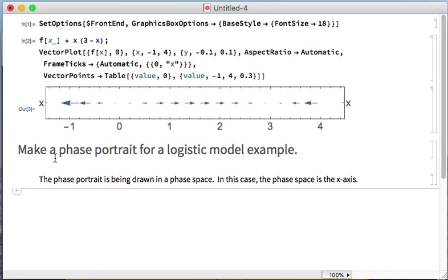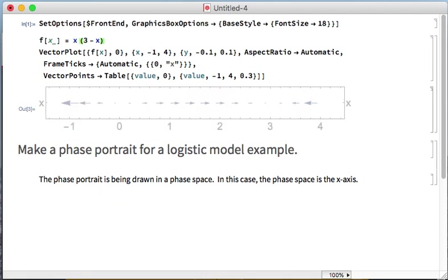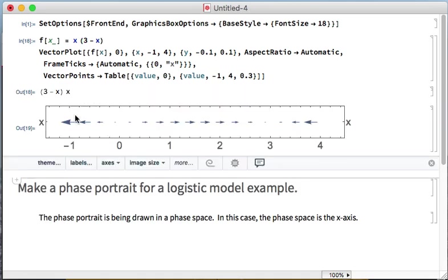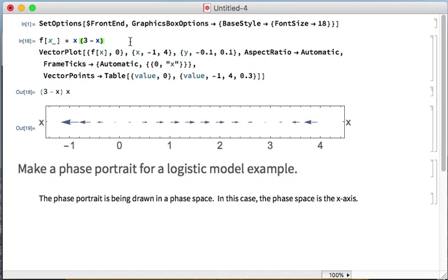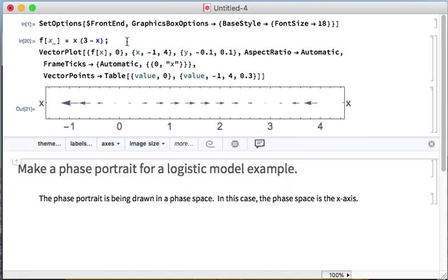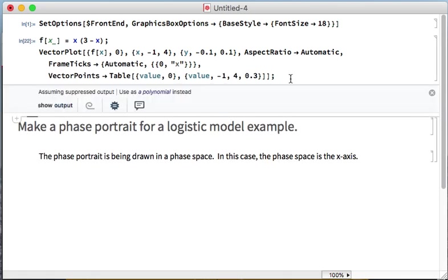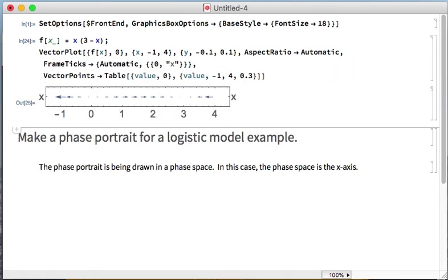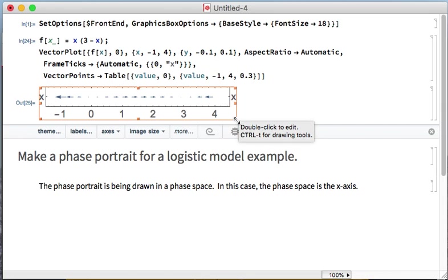I now want to actually make a phase portrait for the logistic model example. Up here, I have my code from before that defines my function and plots it as a vector field along the x-axis. If I add a semicolon to this function, that's going to suppress the output. I could suppress this output too, but that's a little bit silly because I want to see that vector field.